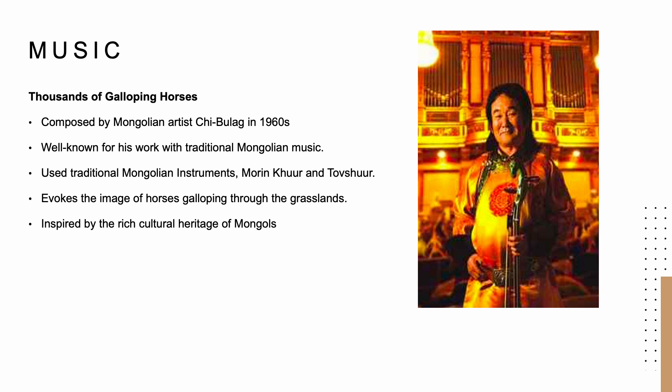For music, I have chosen a famous Mongolian piece called Thousands of Galloping Horses, composed by the renowned artist Chi Budok in the 1960s. Chi Budok is a well-known artist who has been a pioneer of Mongolian morin khuur music. This music has been composed using traditional Mongolian instruments. The morin khuur is also known as a horse head fiddle. The tune of this music evokes images of horses galloping through the grasslands, and the music has been inspired by the rich cultural heritage of Mongolians, where horses have been an integral part for centuries.